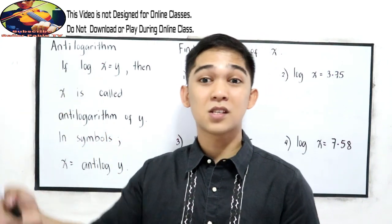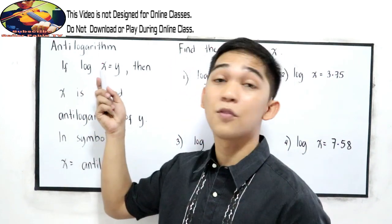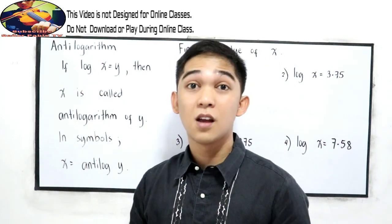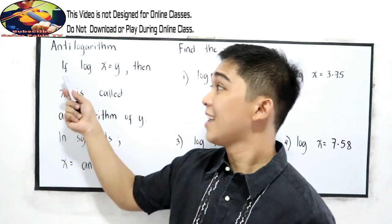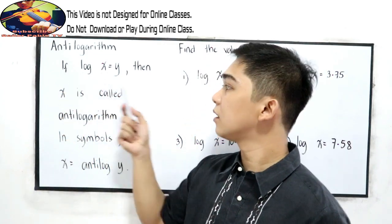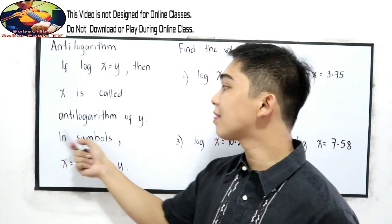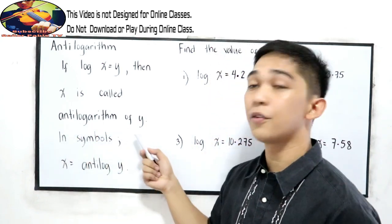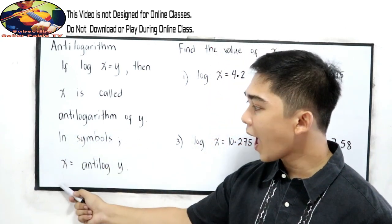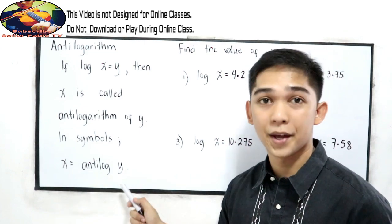In our previous discussion, supposedly we have log of y is equal to x. But this time, if log x is equal to y, then x is called the antilogarithm of y. In symbols, x is equal to antilog y.